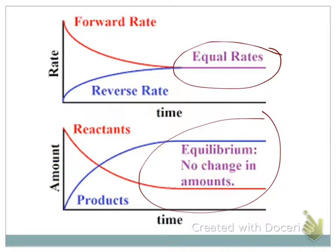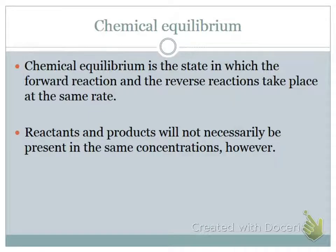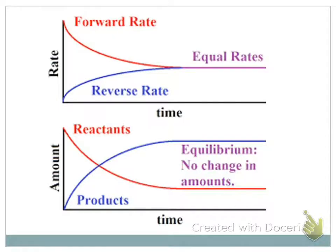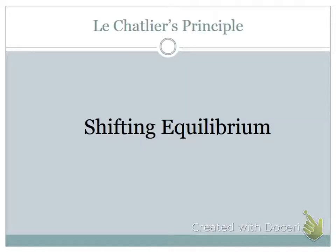A lot of times people think, 'Oh, it's at equilibrium, so their concentrations are the same.' No, it's not. Equilibrium on the graph isn't where the two lines cross — it's where they level off and become constant. So equilibrium is established approximately here, when they're equal and parallel — no change.